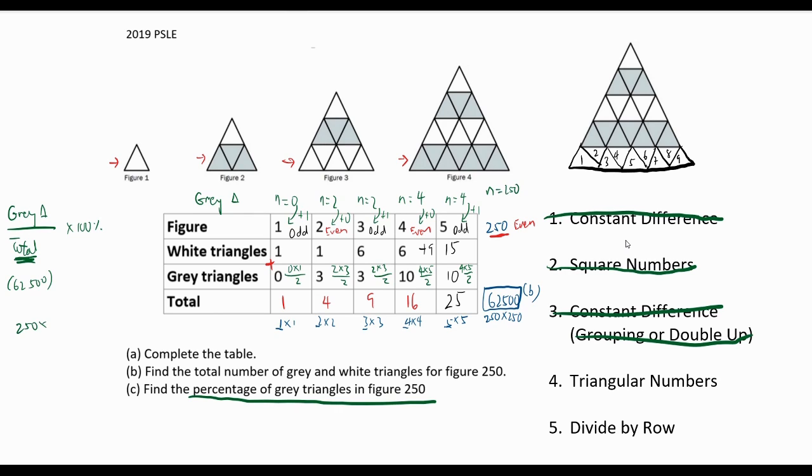So to find grey triangles, we take 250 times 251 divided by 2, which is 31,375.